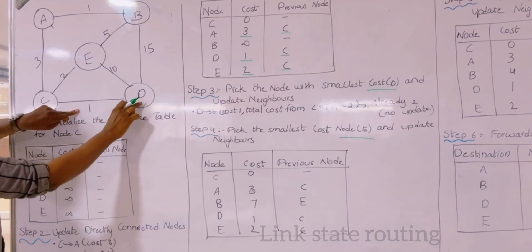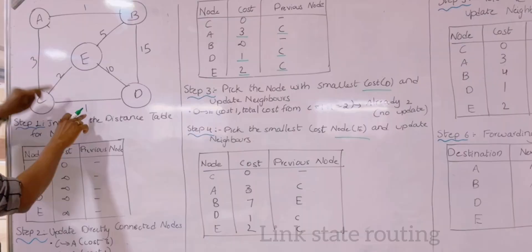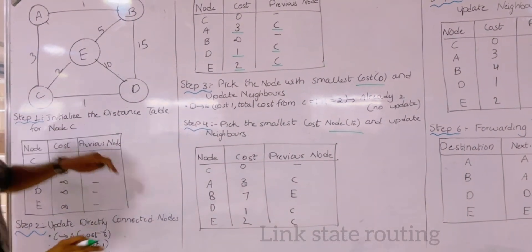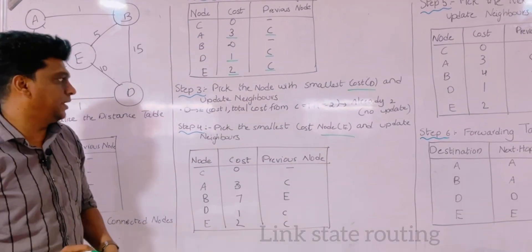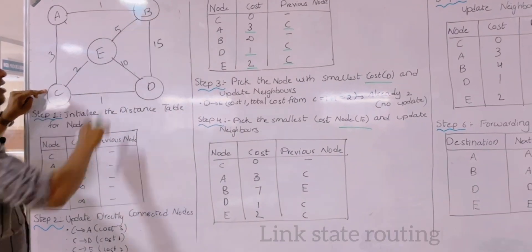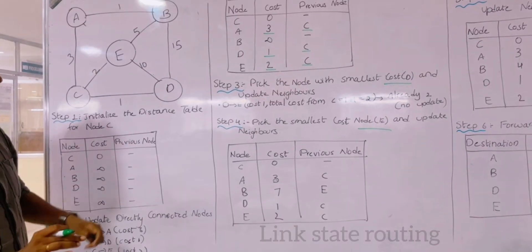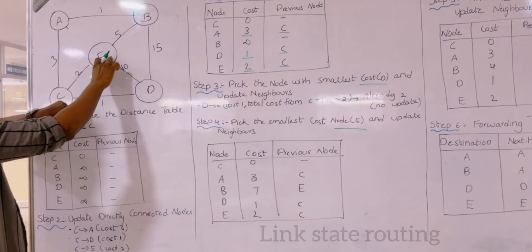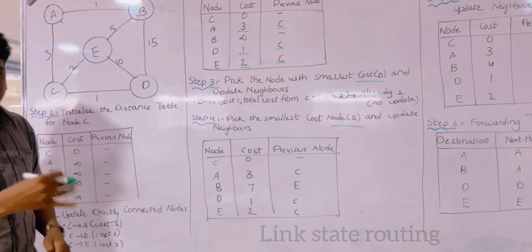The smallest cost node is D, because the distances are 1, 2, and 3. Among these three distances, 1 is the shortest and minimum. So we take node D. This is the smallest distance and we have to update the neighbors. However, whenever we go along D to B, we are getting a total cost of 16, which is a high distance. And moving via D to E also becomes 11, which is also a high cost.